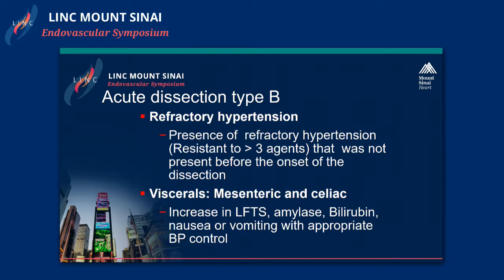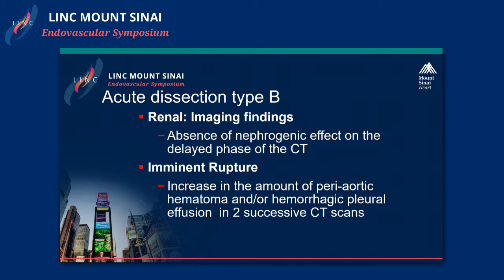Refractory hypertension is defined as patients still having hypertension with three or greater agents that was not present prior to the dissection. Visceral, mesenteric, and celiac malperfusion is identified with elevated LFTs, amylase, bilirubin, and abdominal pain — consistent with what we know mesenteric ischemia looks like. Imminent rupture, the most common reason we take these patients to the OR, is defined by two successive CTs showing an increase in hemorrhagic pleural effusion or hematoma.